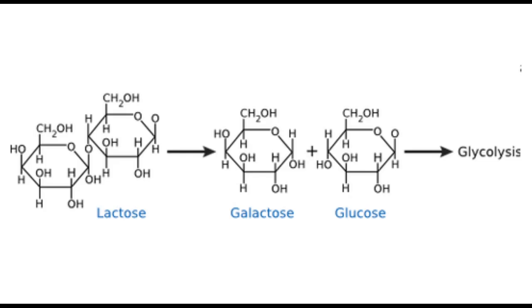The lactose metabolic pathway is very simple. It is a single step catalyzed by the enzyme beta-galactosidase, which splits lactose into glucose and galactose. These products are then metabolized by the cell using glycolysis.